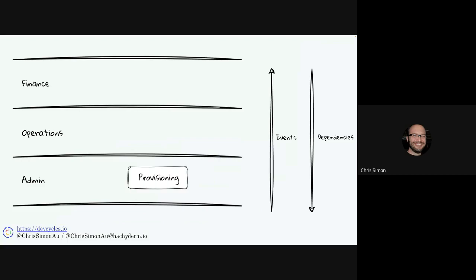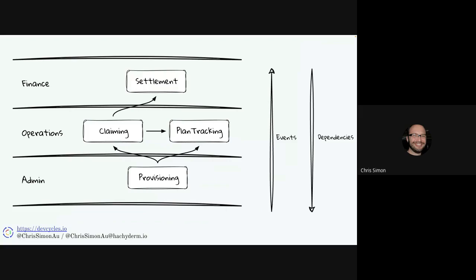What we designed was a bounded context called provisioning to support the administrative layer, a bounded context called claiming to support the receipt of claims — which was a request for payment from a service provider — and then a plan tracking context to help with that core mission of giving visibility to participants about what their plan had in it, what budgets were there, how they were going with their spending, and what they had left to spend. Then a finance layer to facilitate settlement. The arrows track the flow of events through the system. We built an event-driven architecture where data would come in to set up the structures in the provisioning layer — publishing events like there's a new participant, a new plan, or a new service provider. The other contexts would subscribe to those events and set up the data structures they needed to support their rules, whether it's claim authorisation or tracking budgets. Approved claims would fly up to the settlement layer to facilitate actual payment.